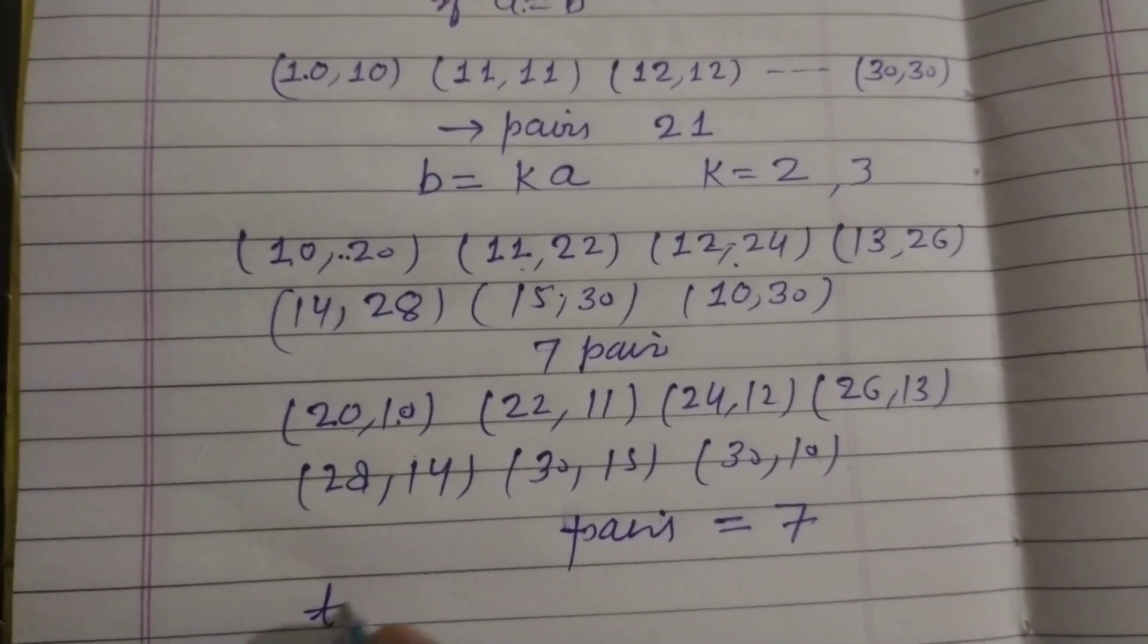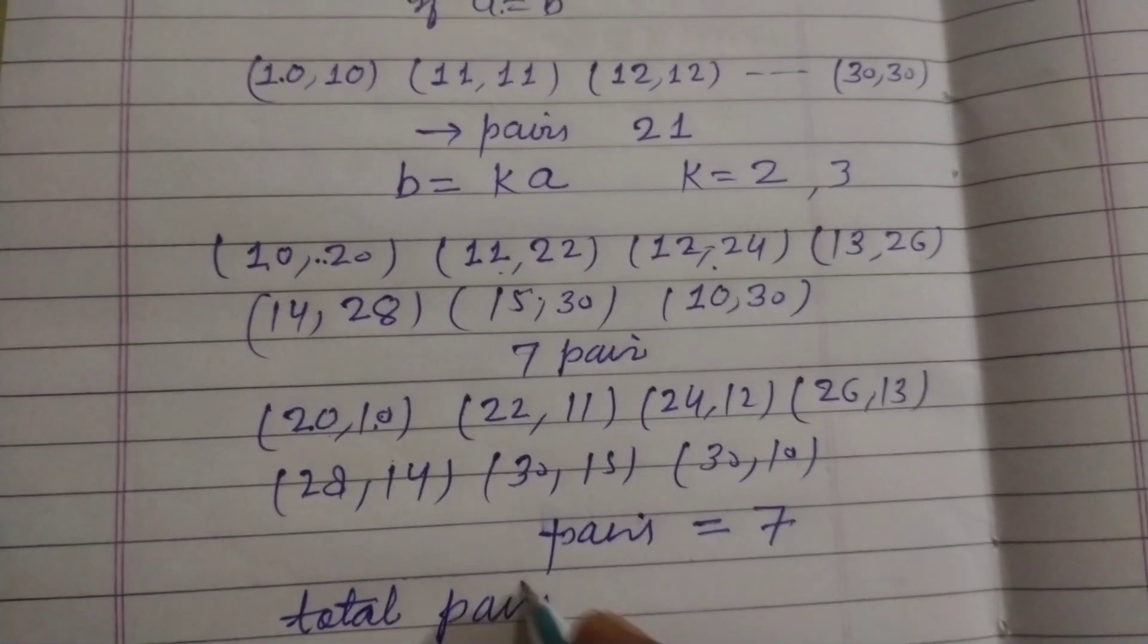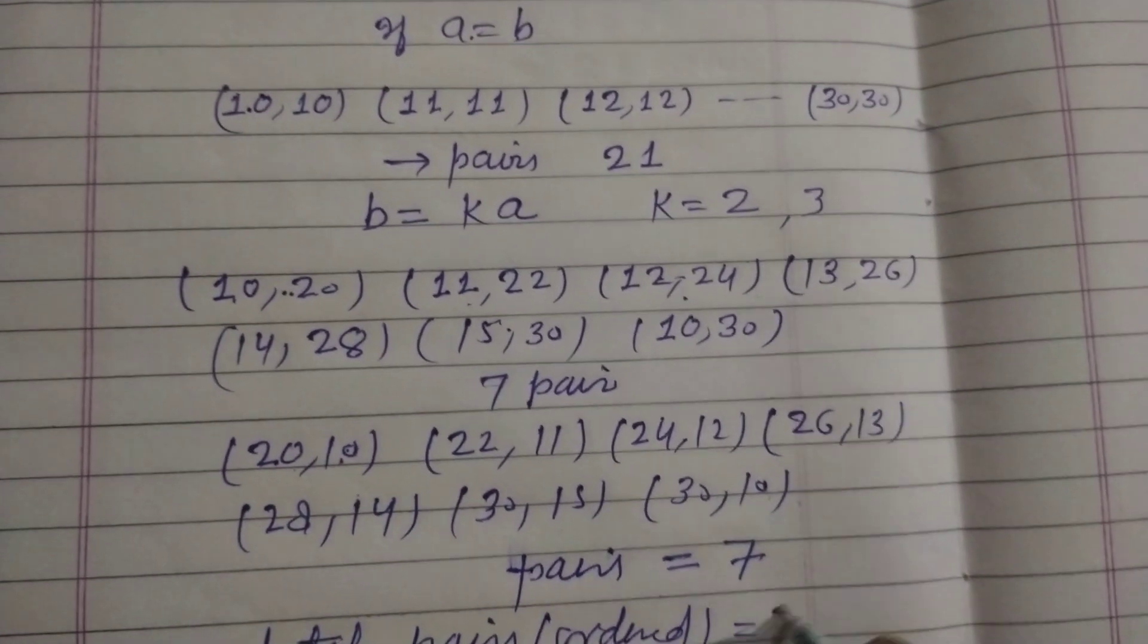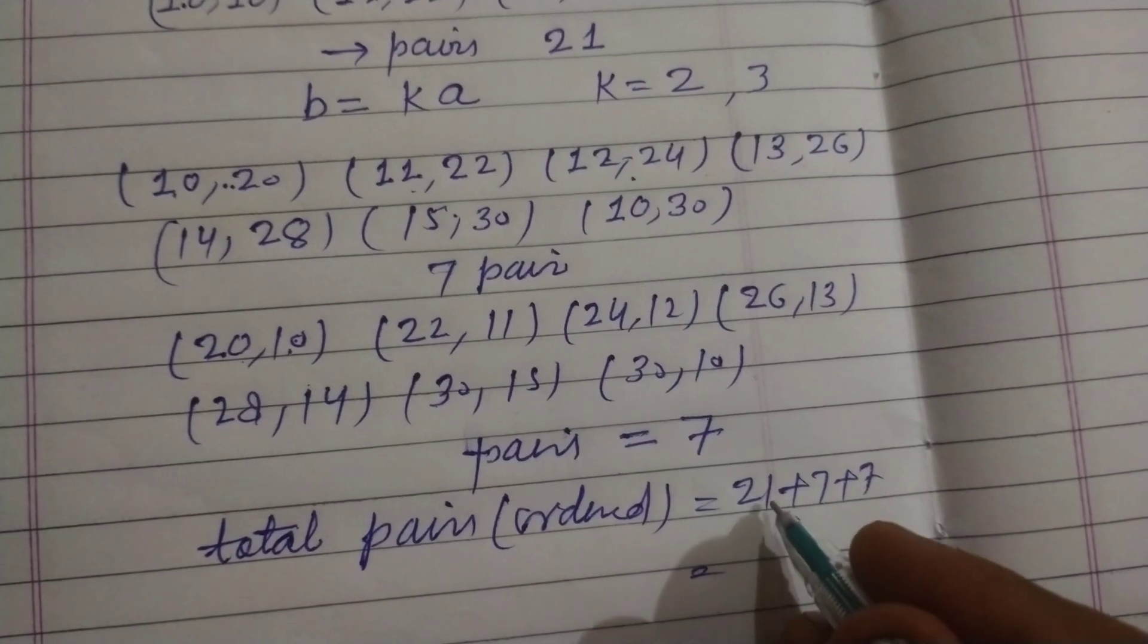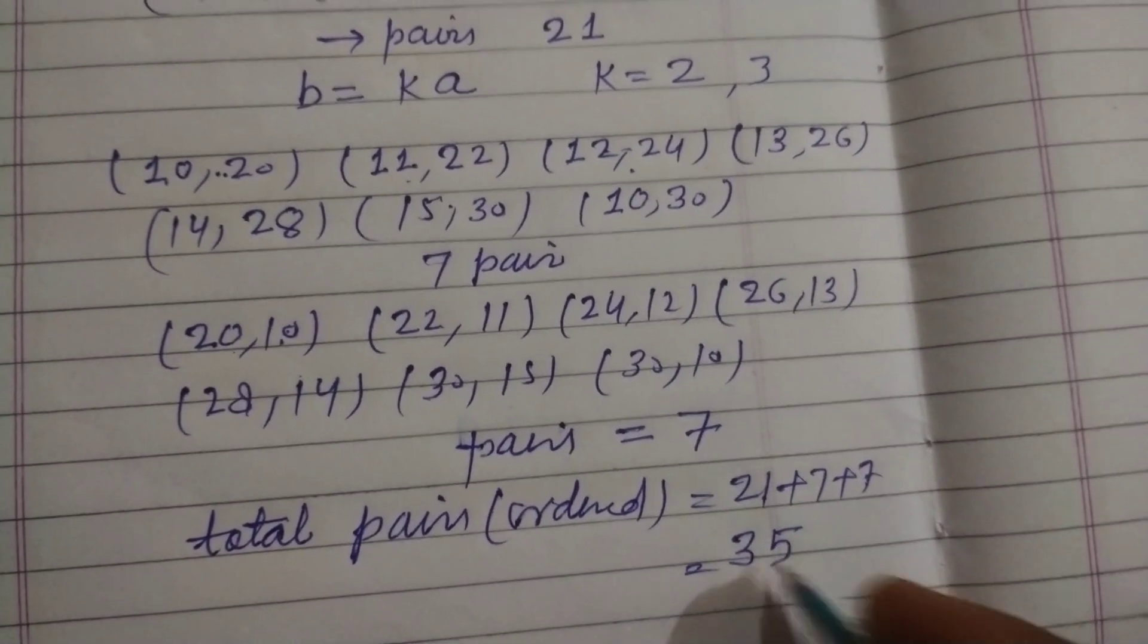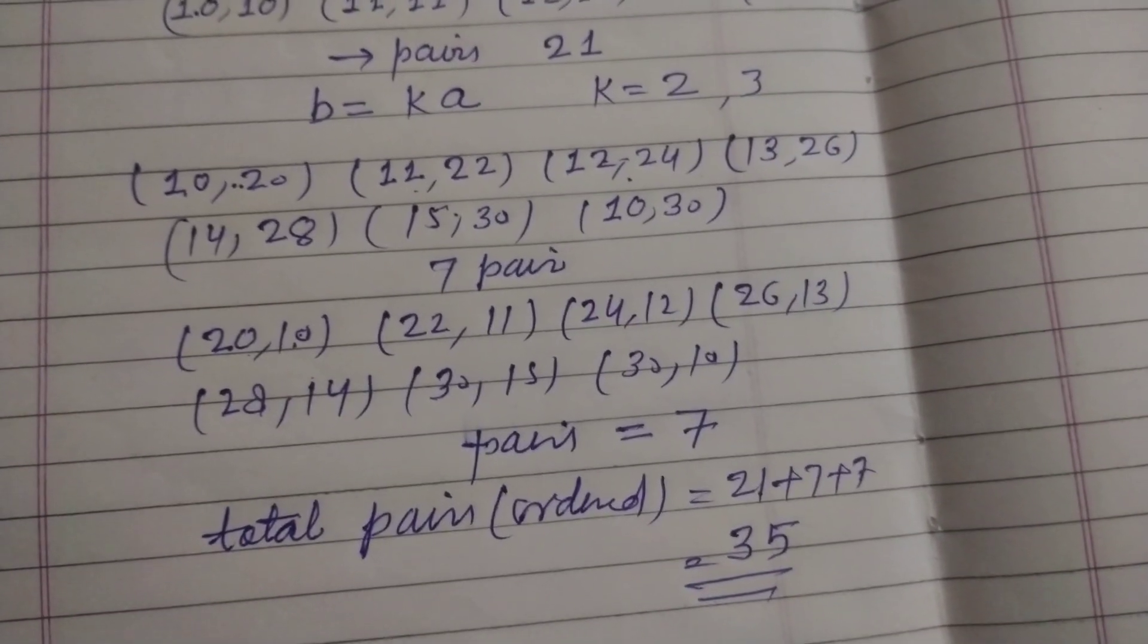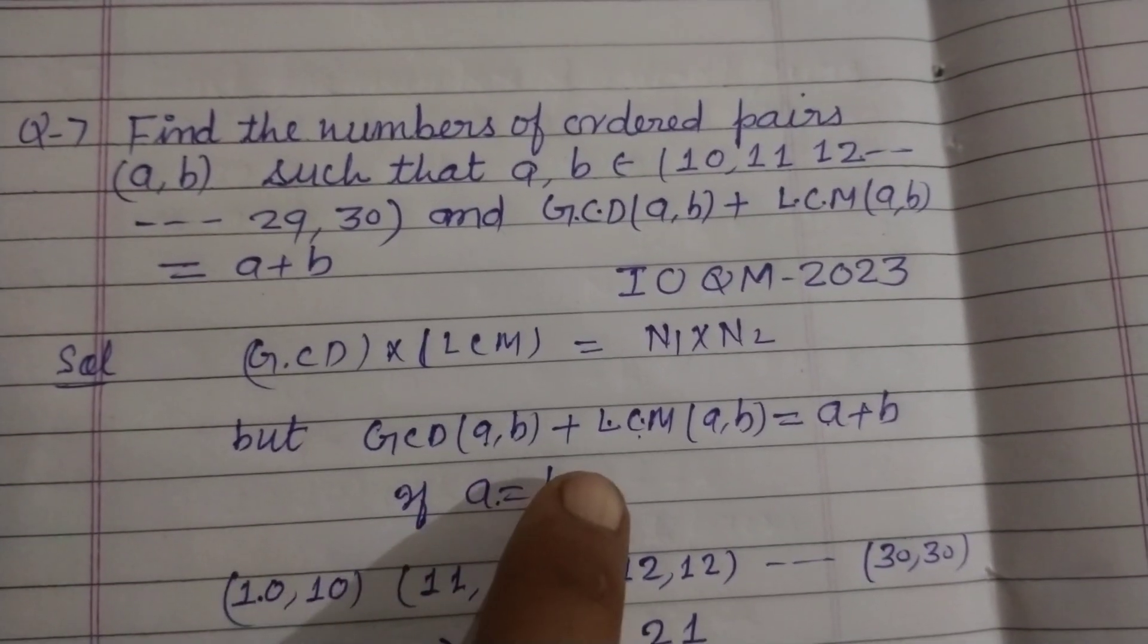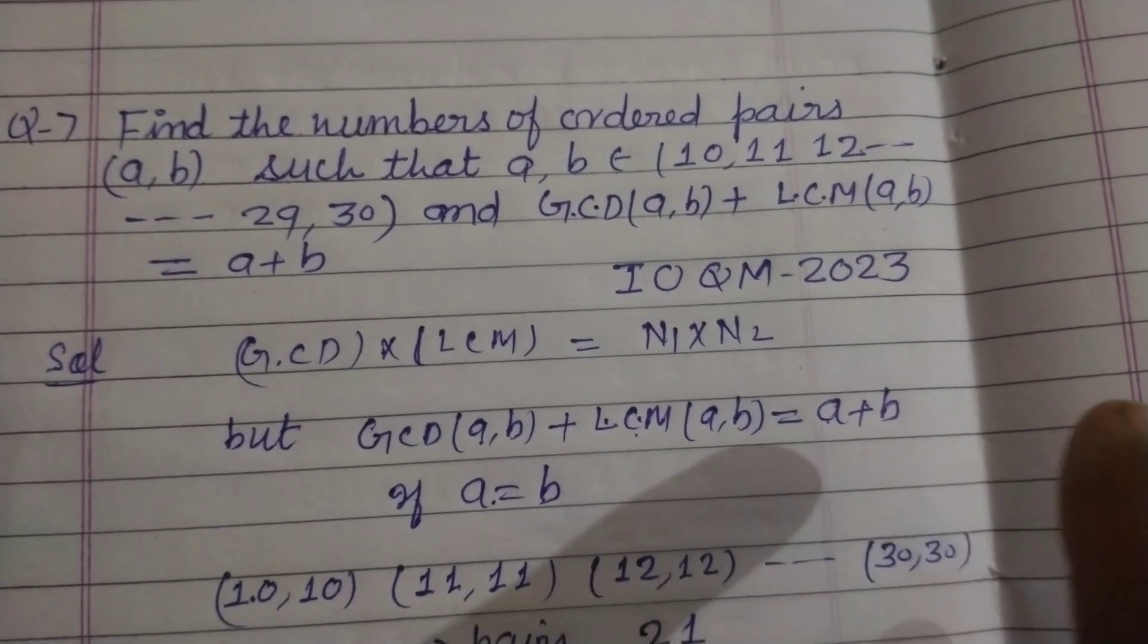So total ordered pairs are 21 plus 7 plus 7, which equals 35. So there are 35 ordered pairs following the given condition that GCD(a,b) + LCM(a,b) equals a + b.